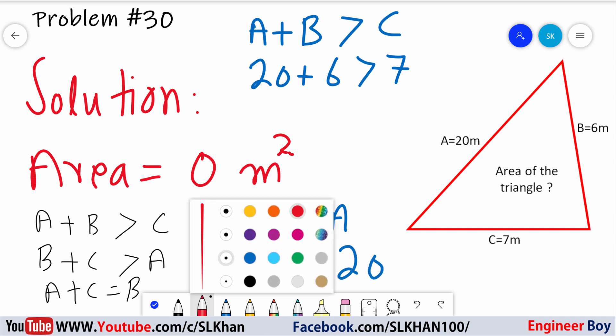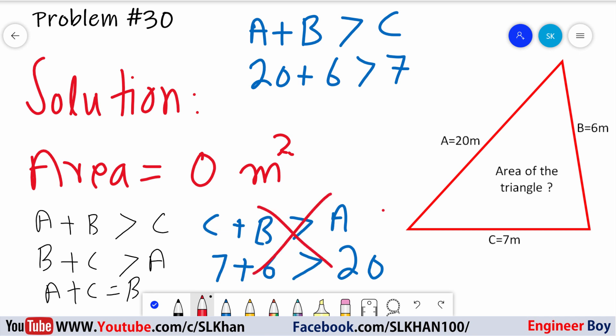That means this rule is failed for this triangle. This triangle does not satisfy the parameters rules, so I can say this triangle does not exist. The area of the triangle is just zero. You cannot construct this triangle.